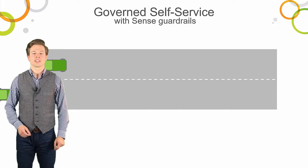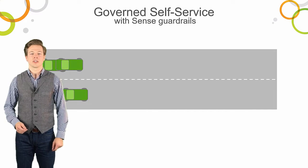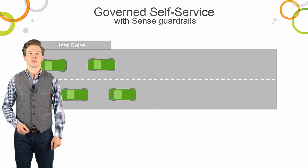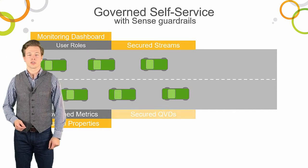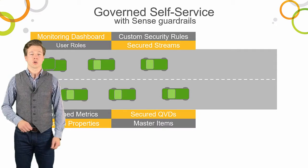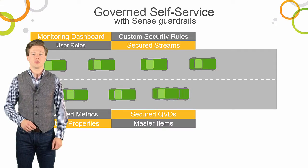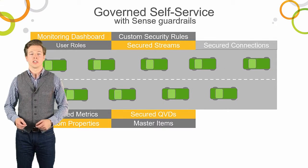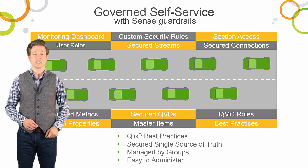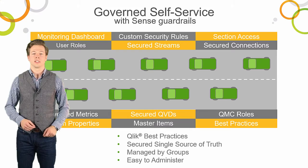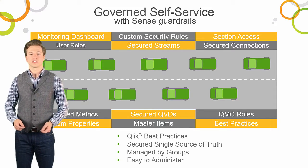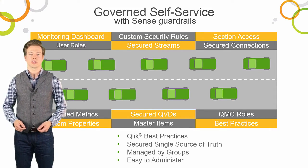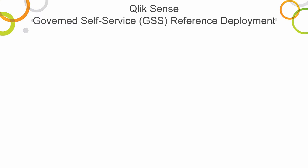Introducing the Qlik Sense Governed Self-Service reference deployment, or GSS. The GSS comprises four components to help you demonstrate, learn, and implement Qlik best practices. They facilitate deploying self-service guardrails that are easy to manage and scale.